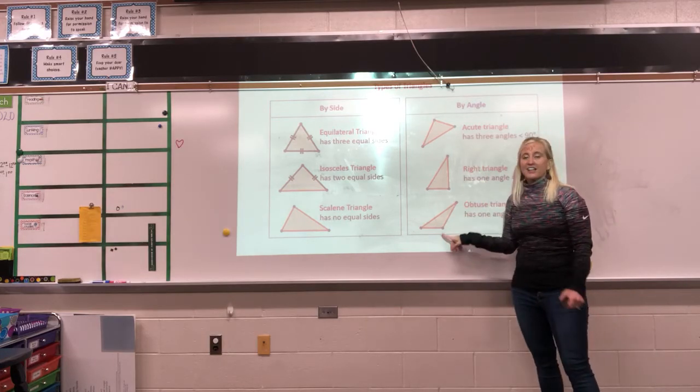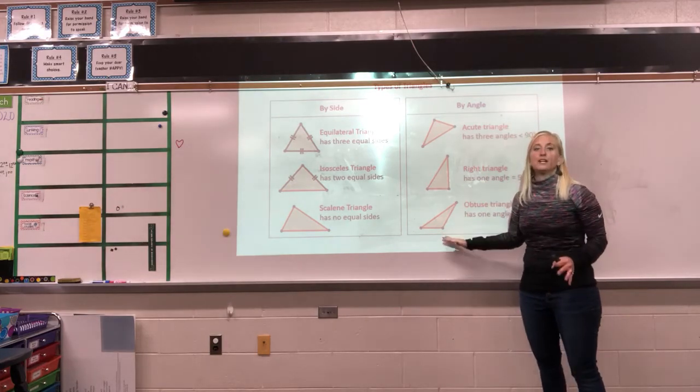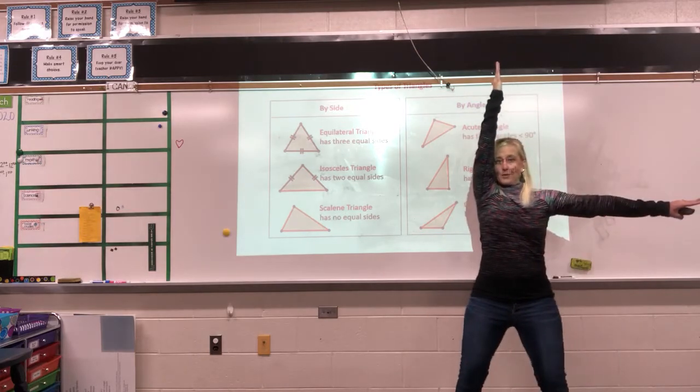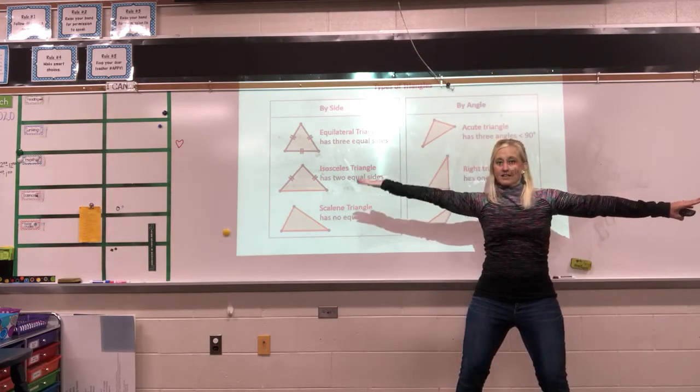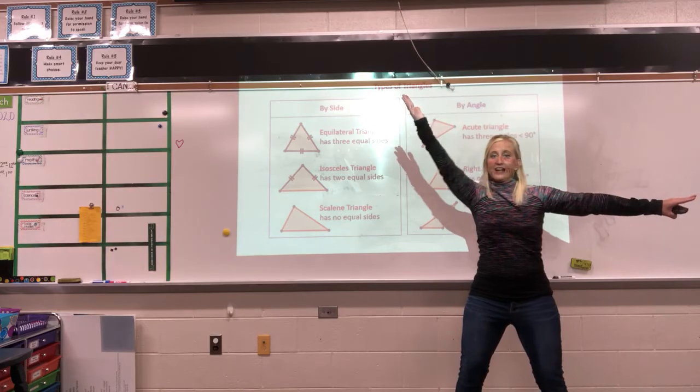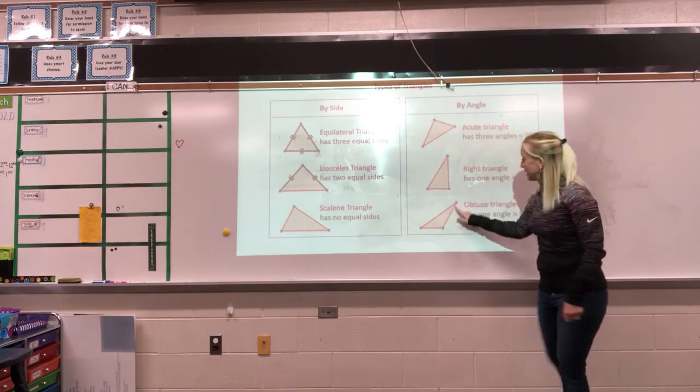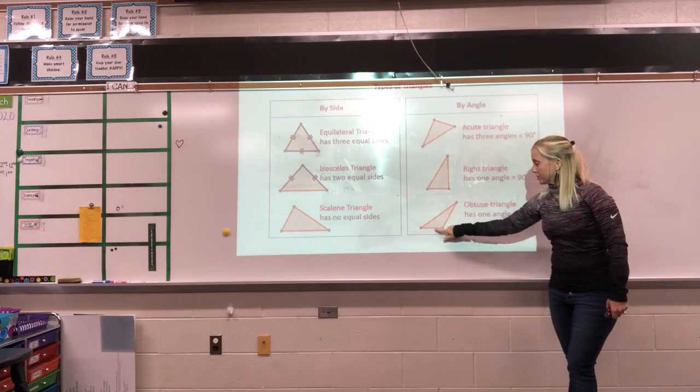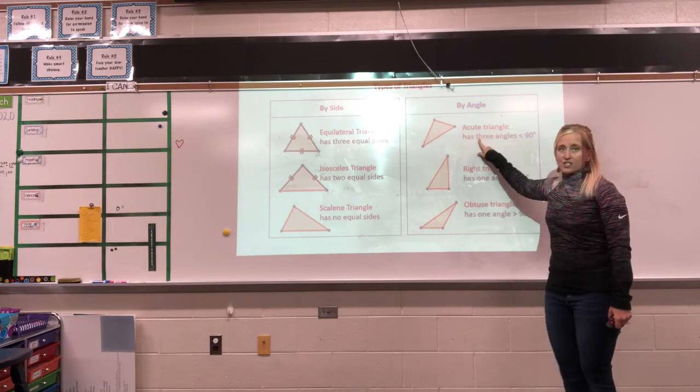If that triangle has any angles that are bigger than a right angle. So remember our right angle, bigger, okay, that's obtuse. If it has one of those angles that's bigger, then we're going to call it obtuse. And then you can see I saved this one for last.